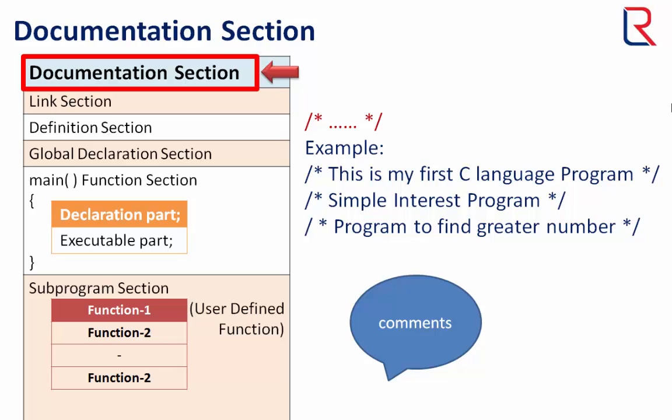Documentation section is represented by a pair of slash asterisk and asterisk slash. It is also known as comment part. The compiler doesn't compile it and remains it as it is. You can also give comments at any point of the program. Here are some examples.